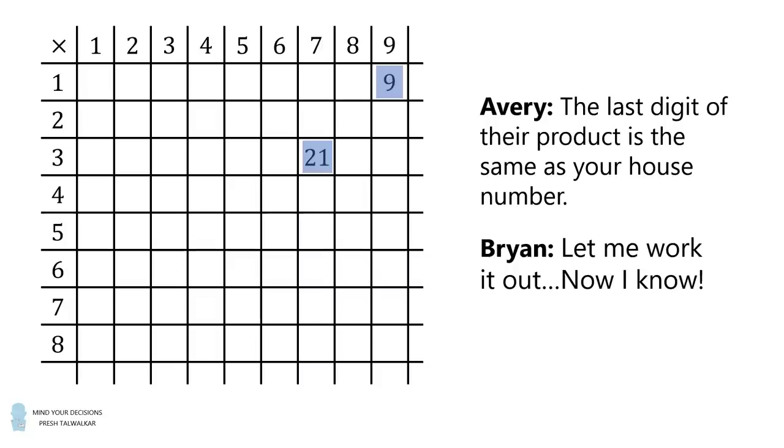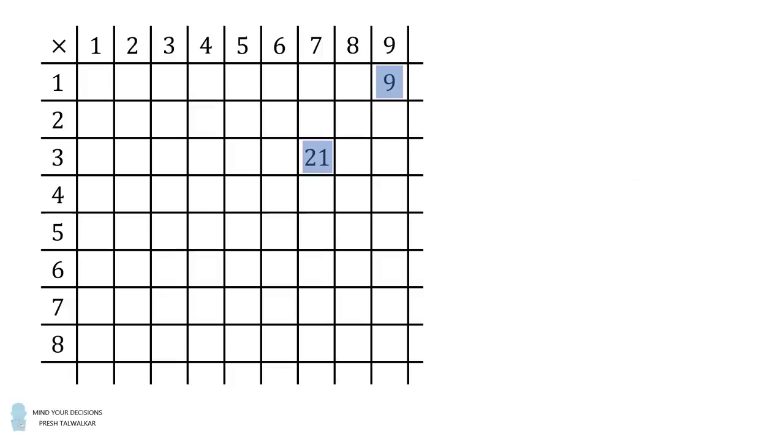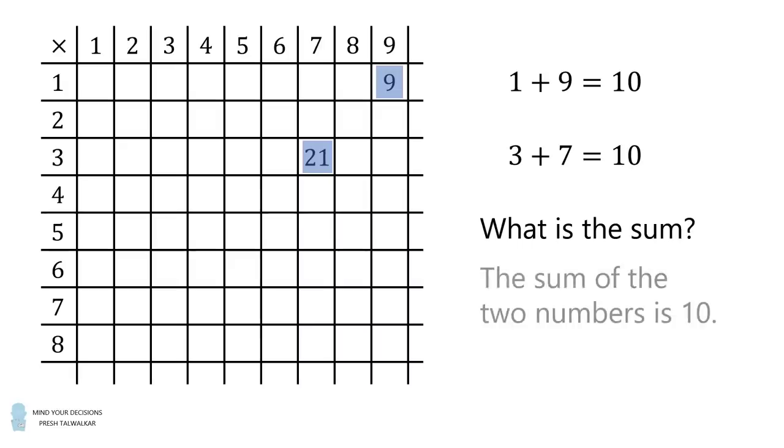So we don't know if Brian's house number was equal to 9 or it was equal to 1. So how can we work out the sum? The interesting thing is that these two cases have exactly the same sum. 1 plus 9 is equal to 10, and 3 plus 7 is equal to 10. So while we don't know whether Brian's house number was equal to 9 or 1, we can definitively say that the sum of the two numbers is equal to 10.